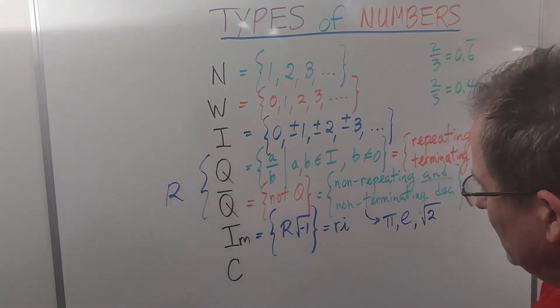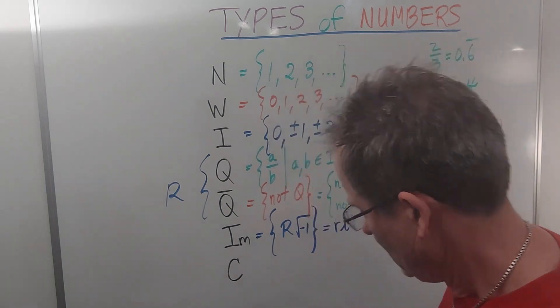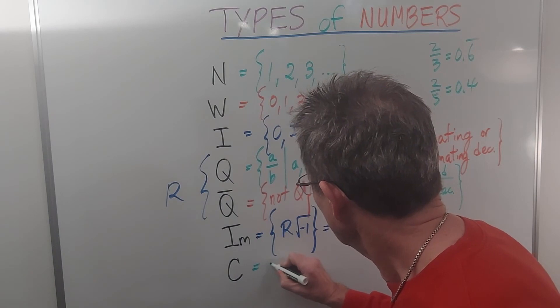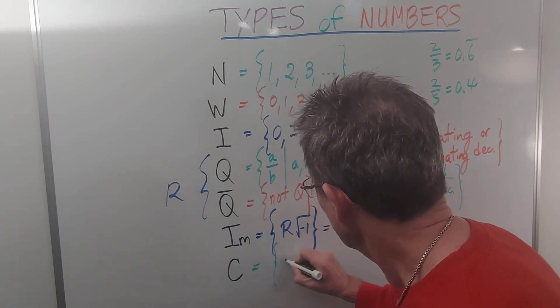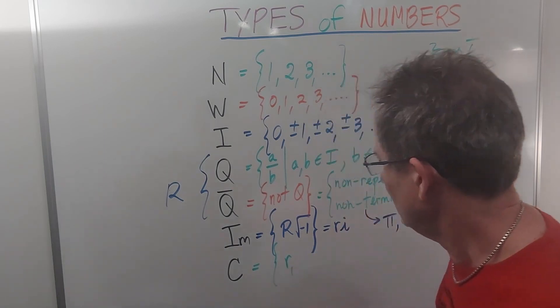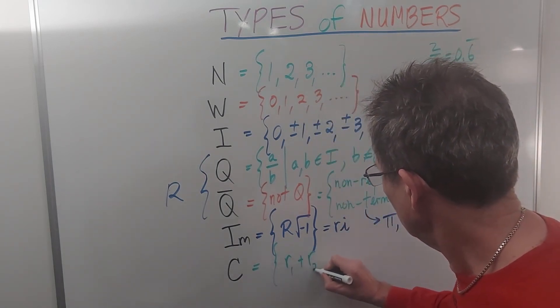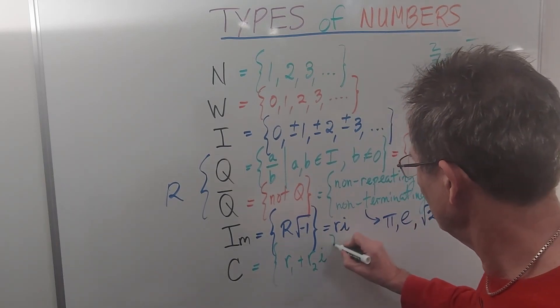And then the complex numbers would be a set of numbers that include numbers like this: a real number plus a different real number times i. So a real number plus an imaginary number.